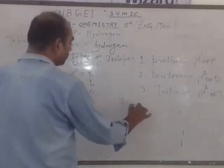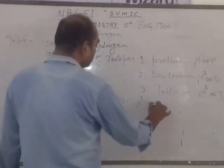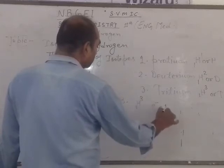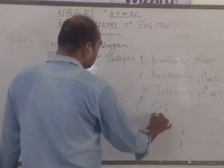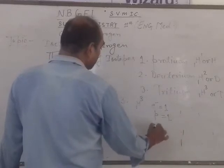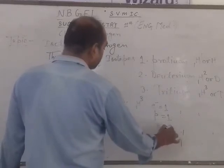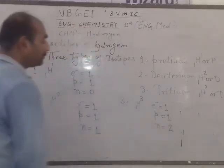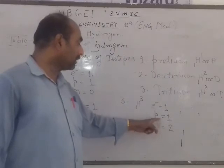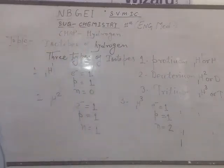Next, tritium — 1H3. The number of electrons in tritium is 1. The number of protons in tritium is also 1. And the number of neutrons in tritium is 2. The protons and neutrons are situated in the nucleus, and the electron revolves in orbit.